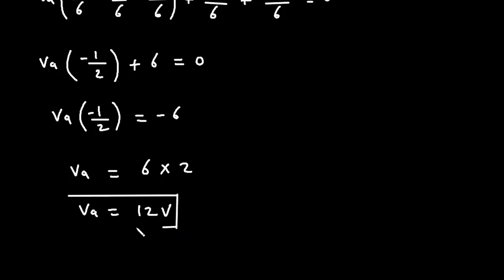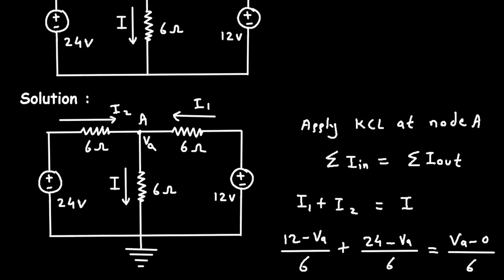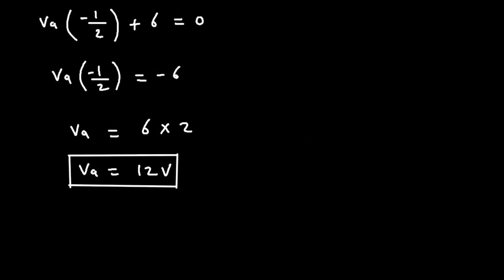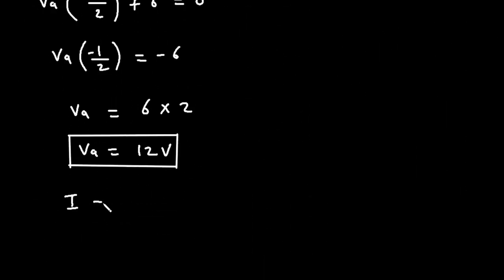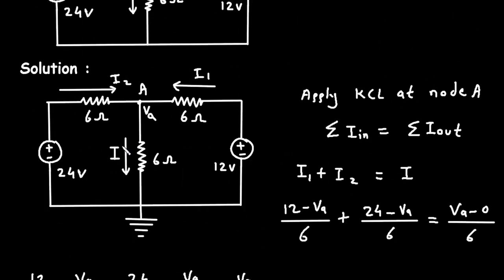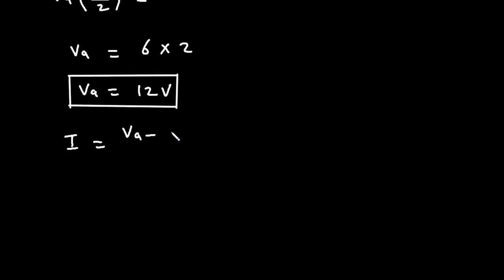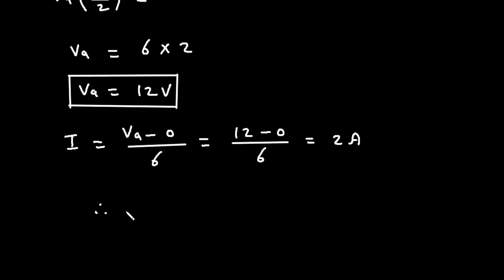In this problem we have to find the value of current I using nodal analysis. Current I equals (VA minus 0) divided by 6. Since VA is 12, it becomes 12 divided by 6, which equals 2 ampere. Therefore, current I is equal to 2 ampere. Thank you.